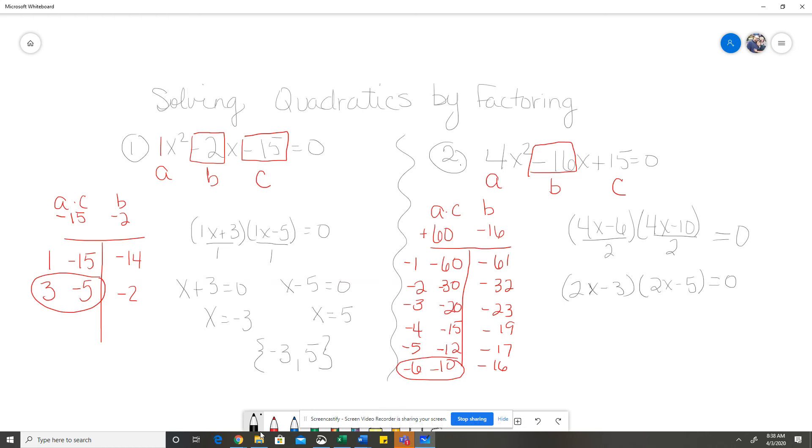And again, I'm going to use my zero product rule and separate those out to find out what makes each binomial or what makes each factor equal to 0. So, 2x minus 3 equals 0. I'll add 3 to both sides. Then, I'll divide both sides by 2. So, I get x equals 3 halves. For 2x minus 5 equals 0, add 5 to both sides. Then, I'll divide by 2. So, x equals 5 halves. And my solution set for this one is 3 halves and 5 halves.